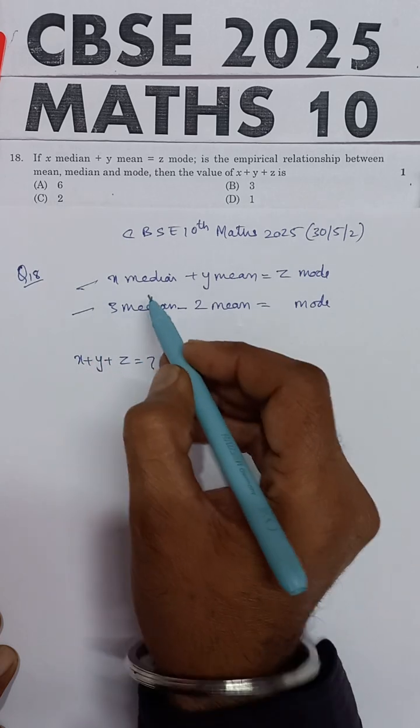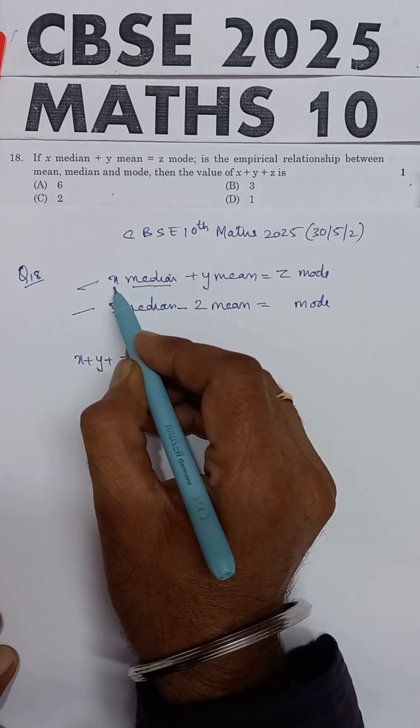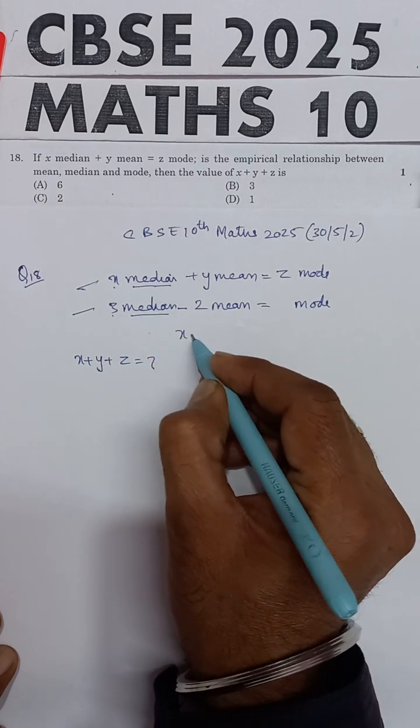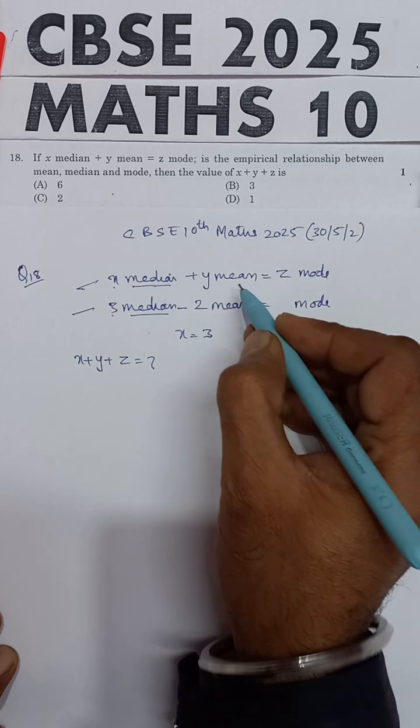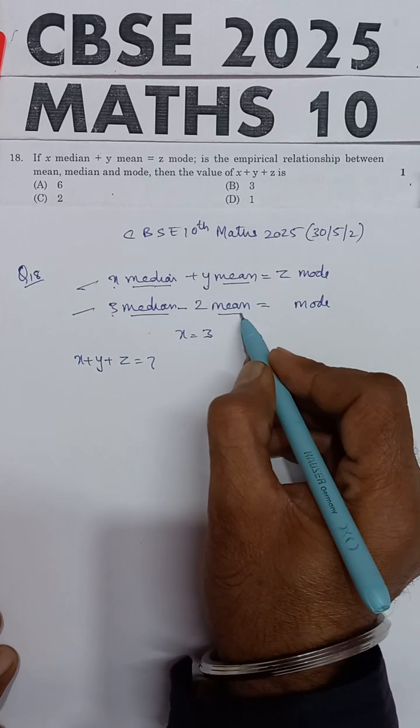then the coefficient of median with x is equal to 3, so x will be equal to 3. Mean with y is given in the problem, and in this relation which we know